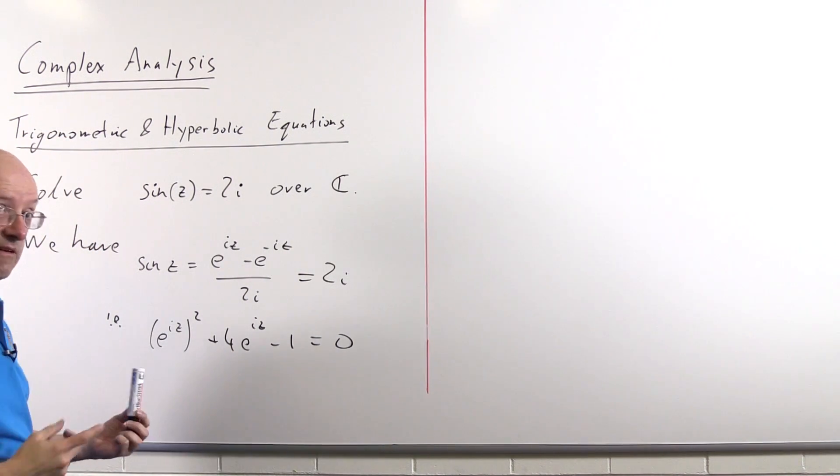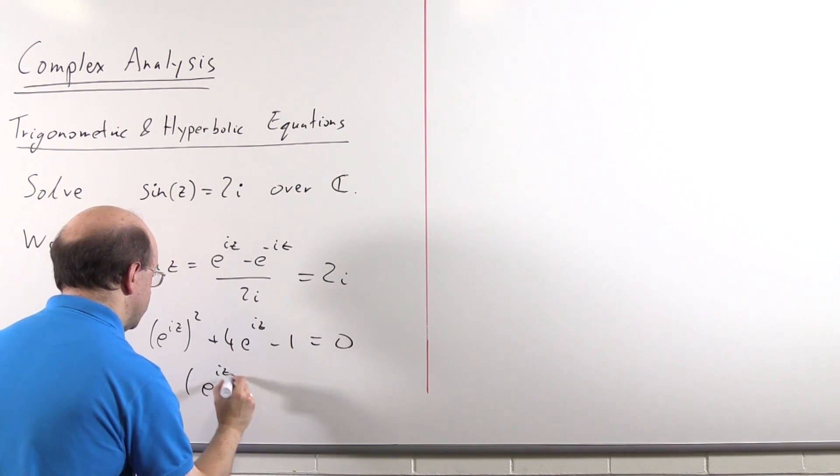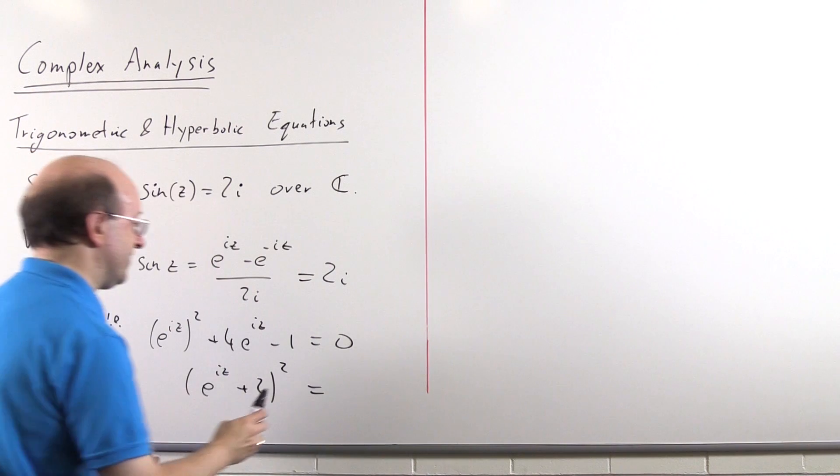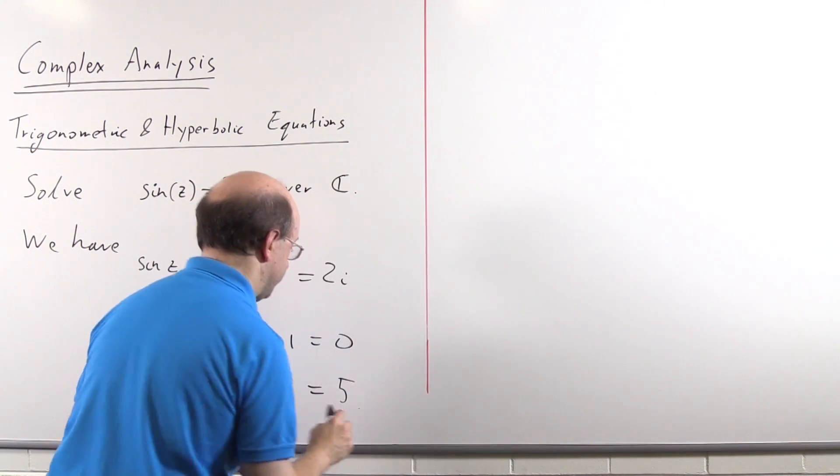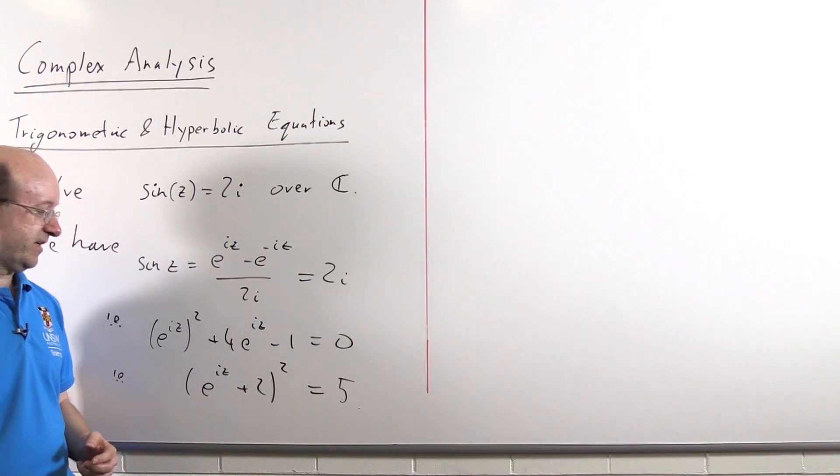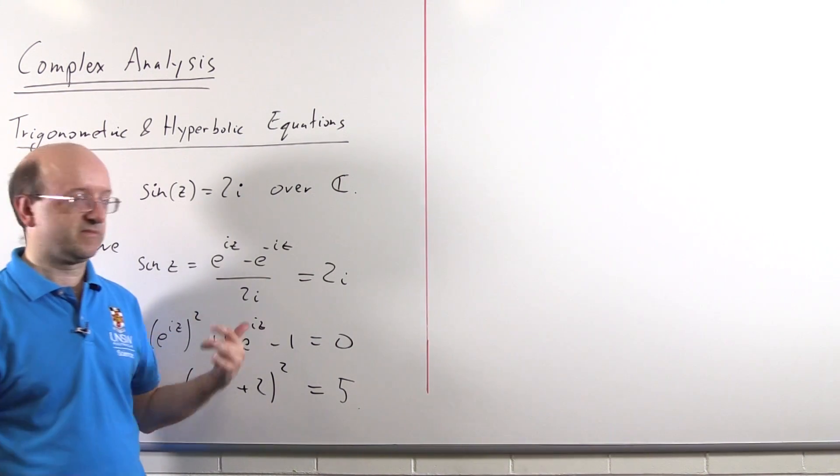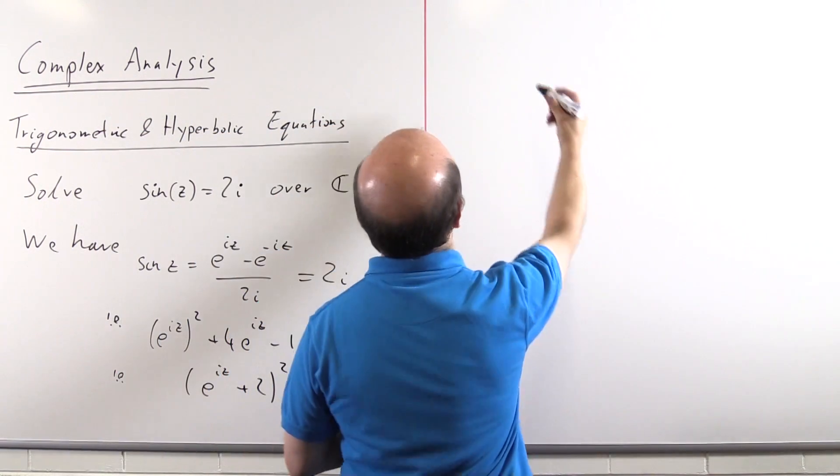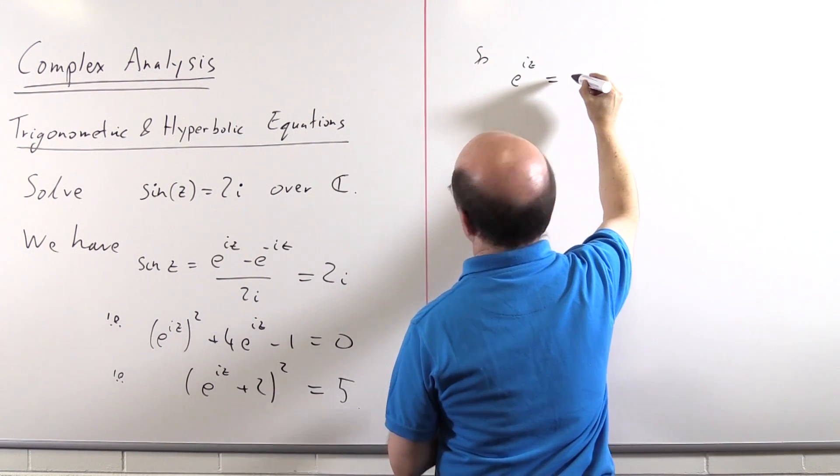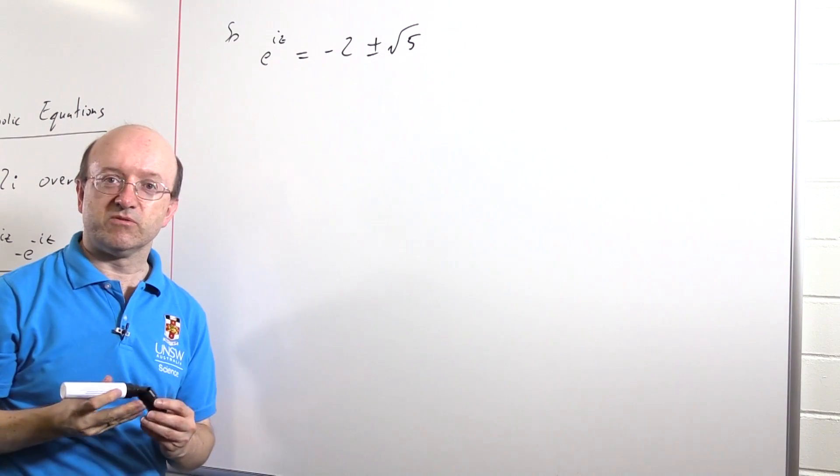Given I've got a 4 here, I'm going to actually complete the square. So this is telling me that e to the iz plus 2 all squared will equal, when you work out what it's got to be, you'll see it has to be 5. So this tells us e to the iz plus 2 is plus or minus root 5. We're going to find e to the iz next. So e to the iz is minus 2 plus or minus the square root of 5.